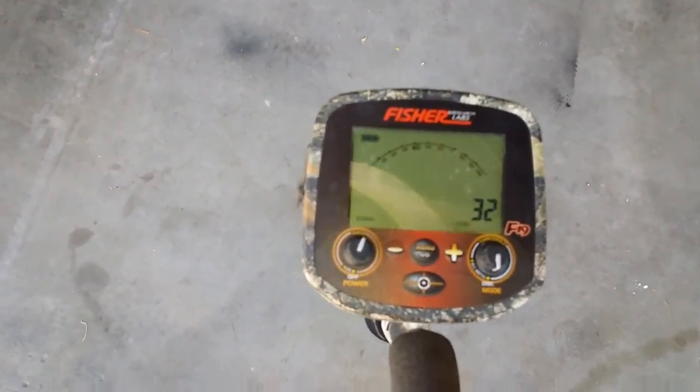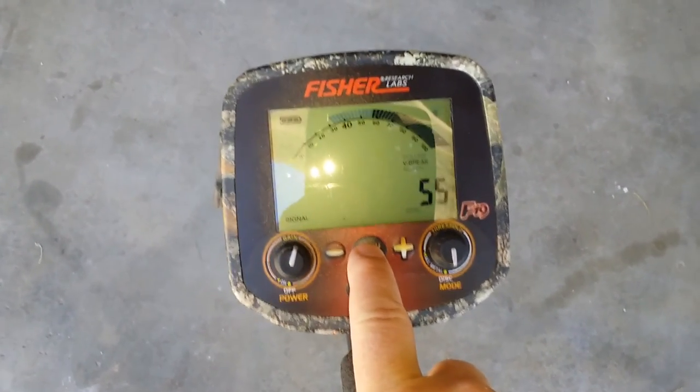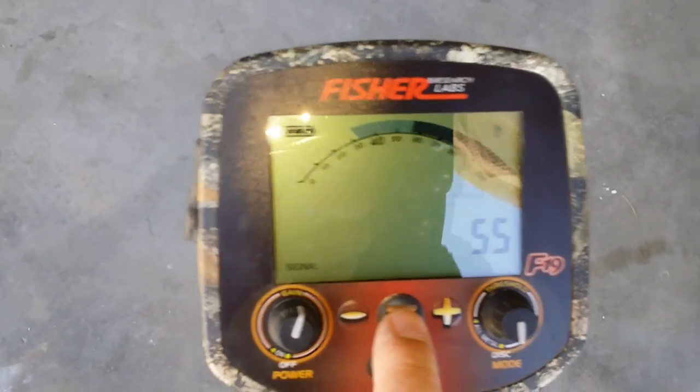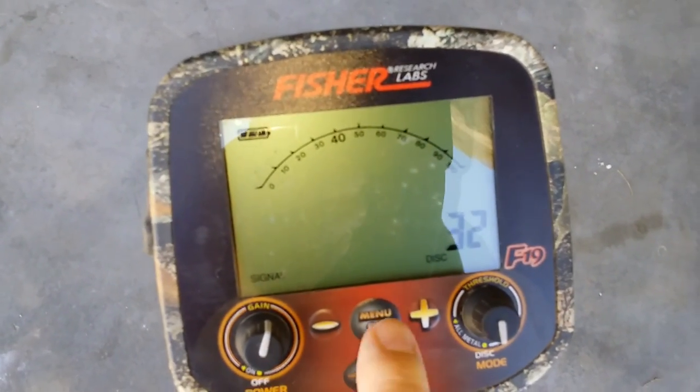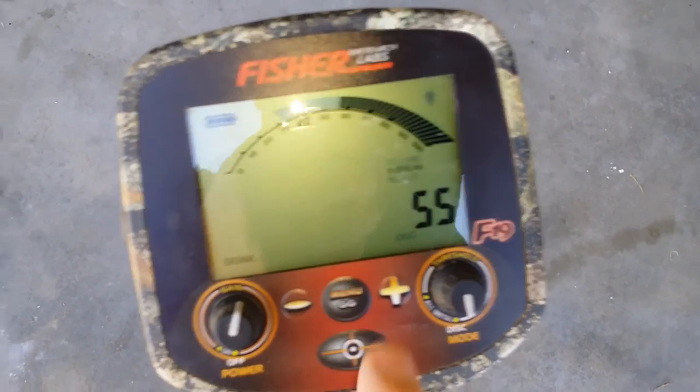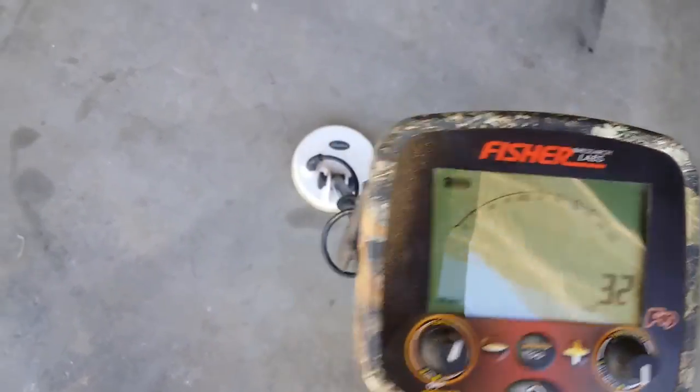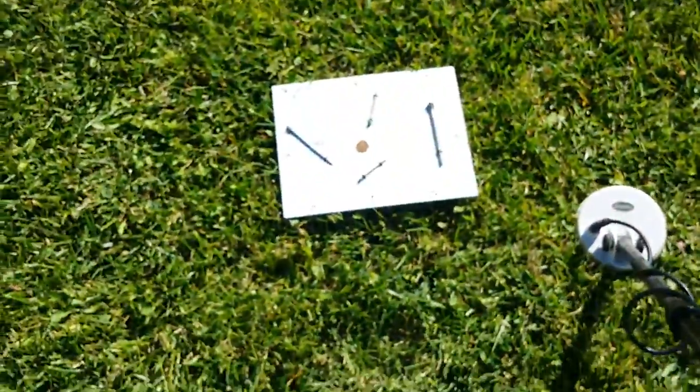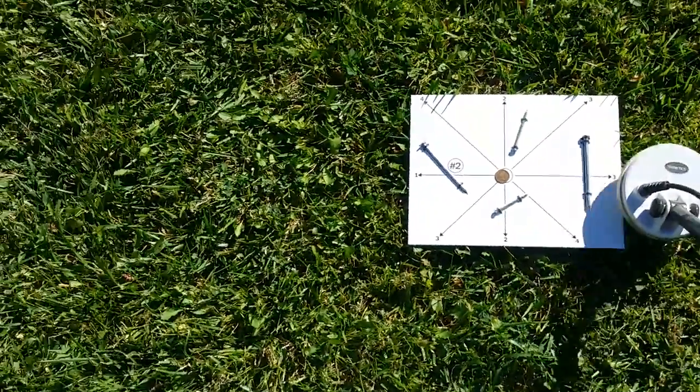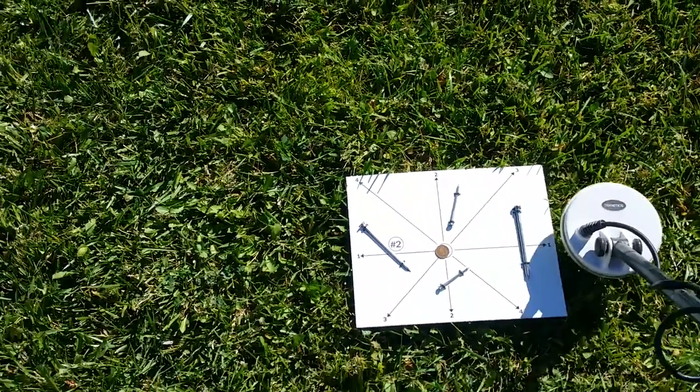Okay, so now I have my F19 and the pattern I'm using is kind of a two-tone pattern as well. But as you can see, I have it discriminated up to 32 and that's right about where those nails, the top part of where those nails are reading. So the nails should be discriminated out, everything else should be reading. And if you go over just the nail, see I'm not getting anything.